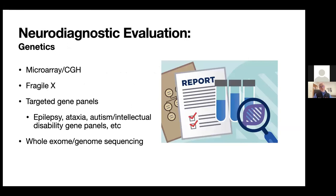In terms of genetic testing — which I do a lot of as part of our neurogenetics clinic — we can order a microarray or CGH as first-line genetic screening, Fragile X testing if the child has autistic features, targeted gene panels for seizures, ataxia concerns, or intellectual disability, or if unsure, whole exome or whole genome sequencing.